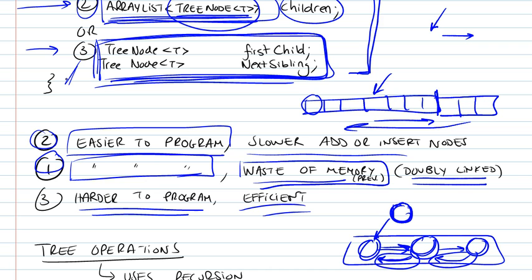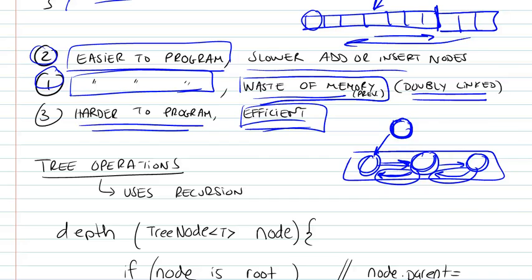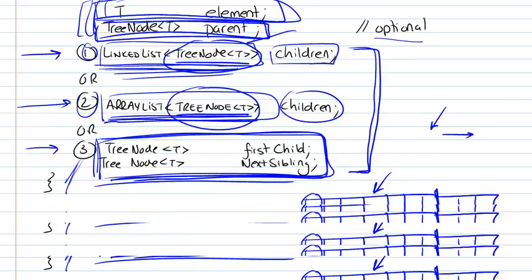So the third implementation would be the best in terms of efficiency, but it would be harder to program, because you're going to have to keep track of all these references, first child, next sibling. So these are the implementations, and we remind ourselves we have the element itself and an optional parent node.